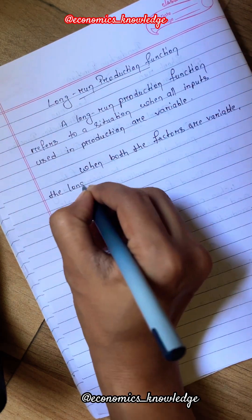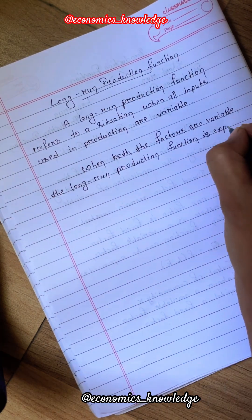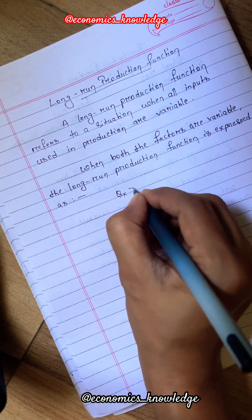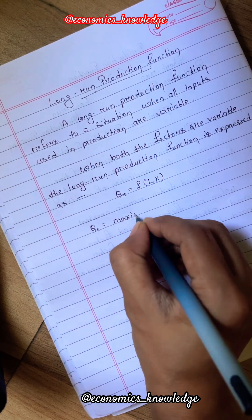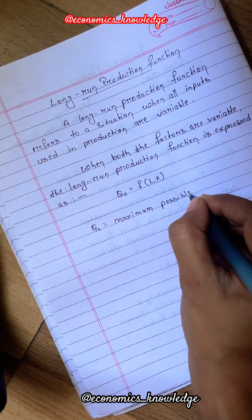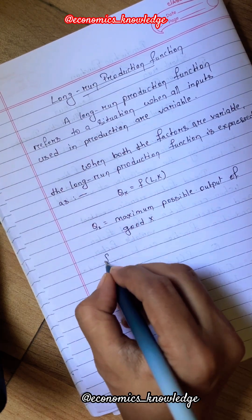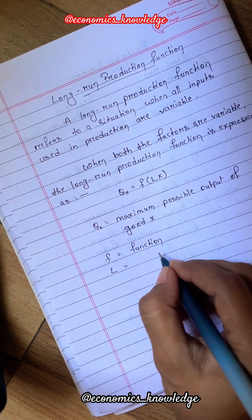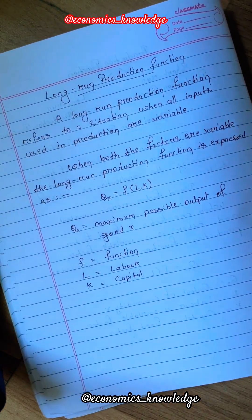When both the factors are variable, the long run production function is expressed as: Qx = f(L, K). Here Qx means maximum possible output of good X, f means function, L means labor, and K means capital.